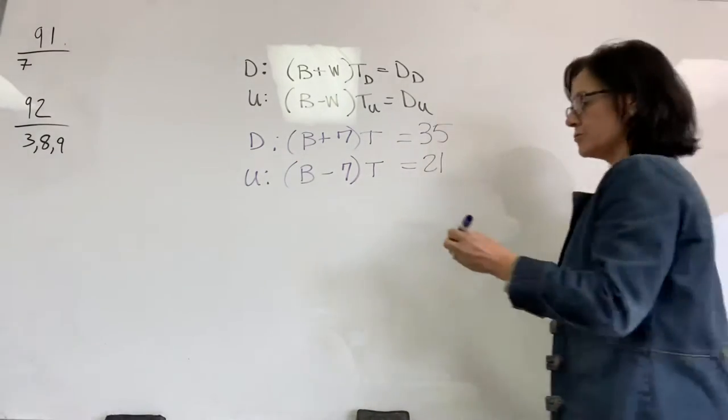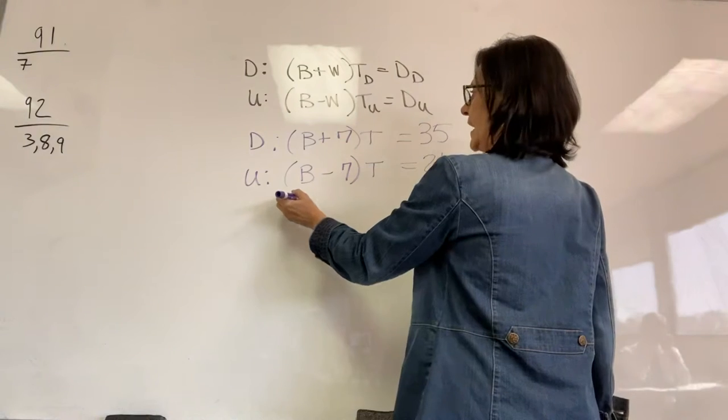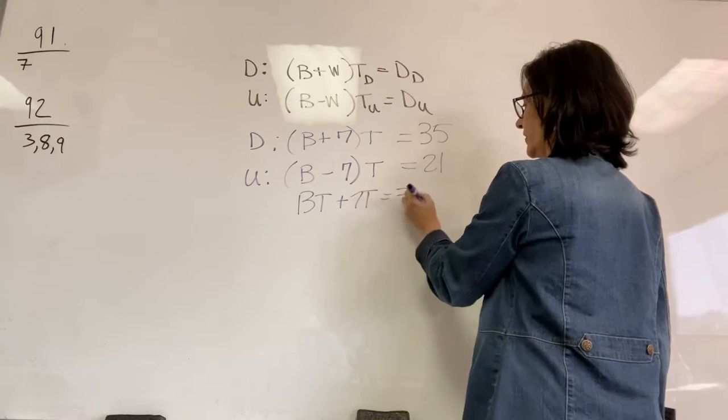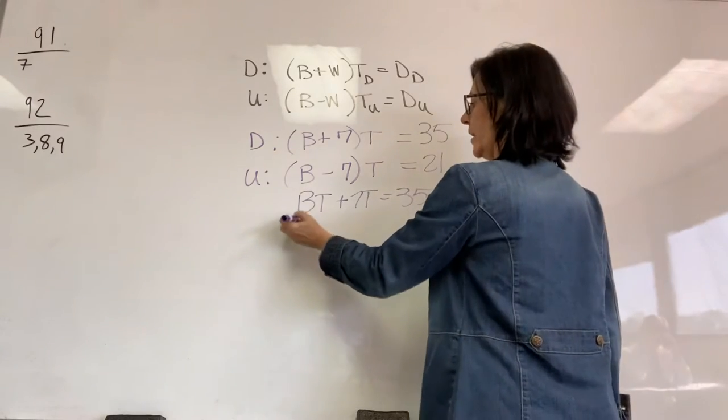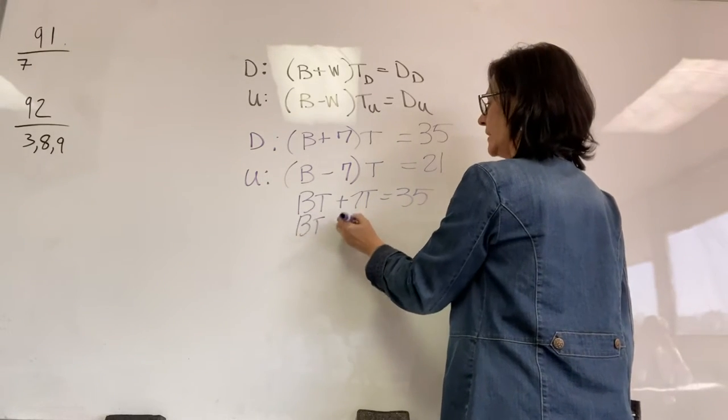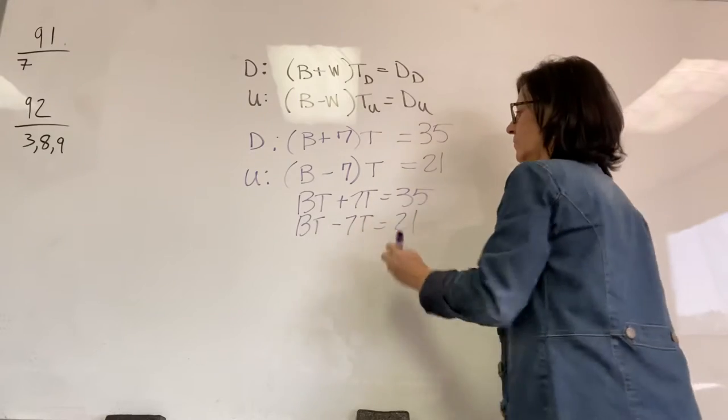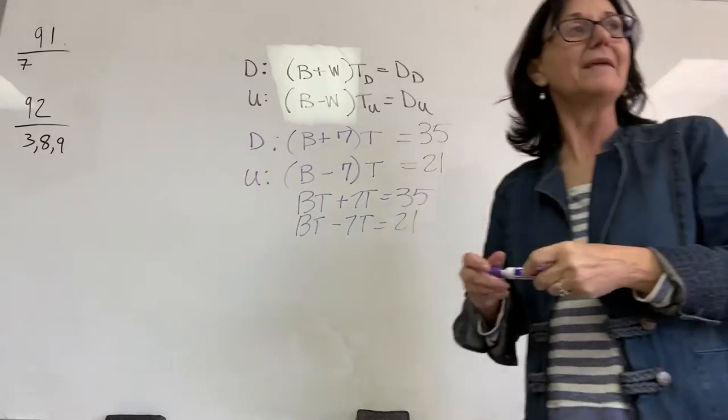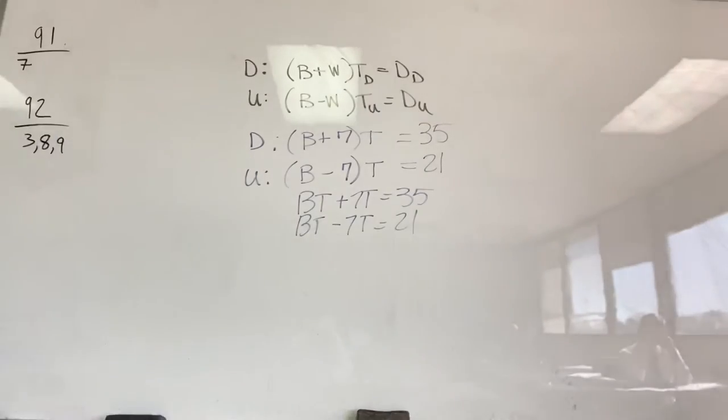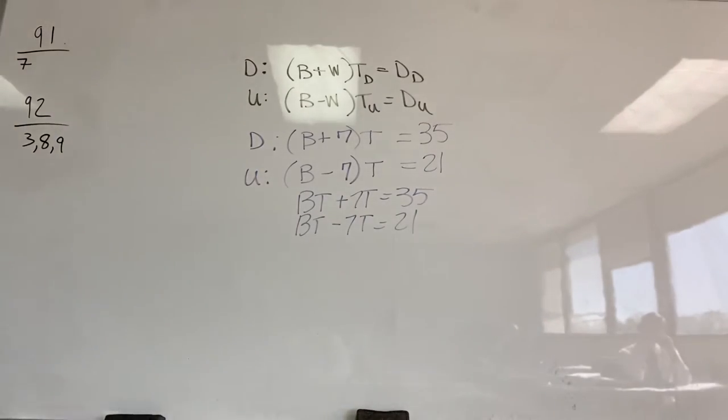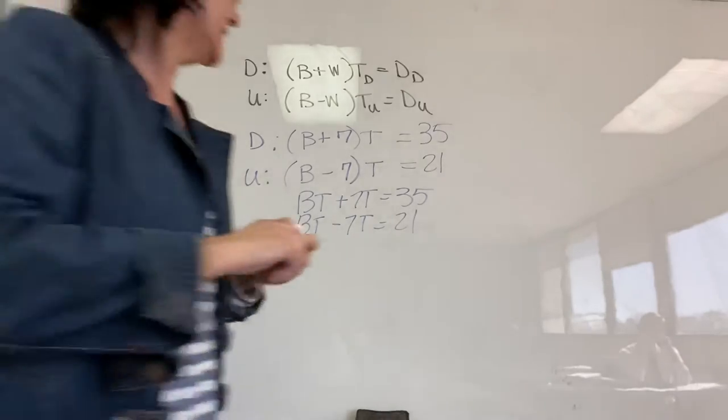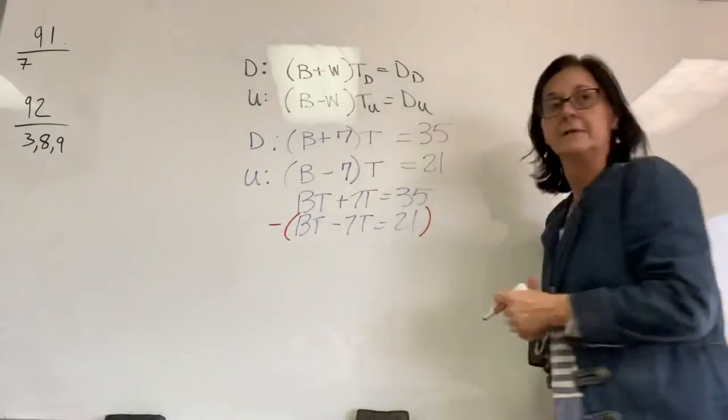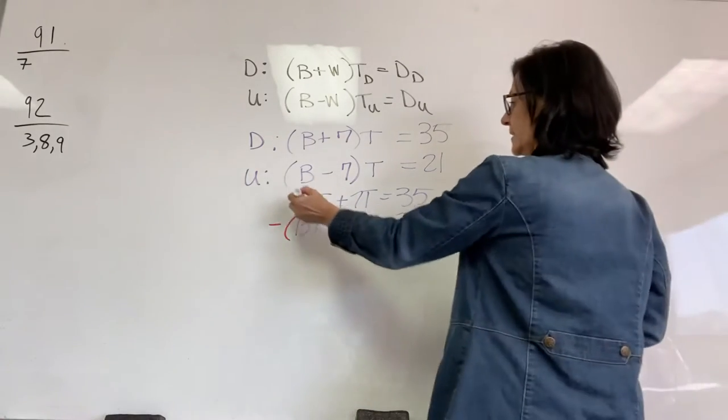How fast can the boat go in still water? All right, so we'll distribute the T. So in downstream, we have BT plus 7T equals 35. And in upstream, we have BT minus 7T equals 21. What do we want to eliminate? Yes, Isabella? BT. We always want to eliminate BT, even though the temptation is to eliminate 7Ts. So I'm going to subtract them, and that's how I'll eliminate.